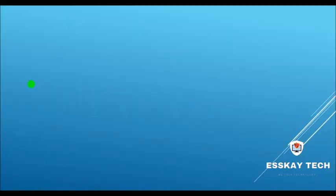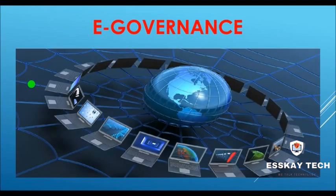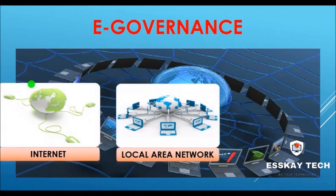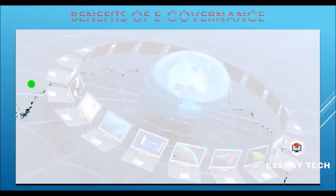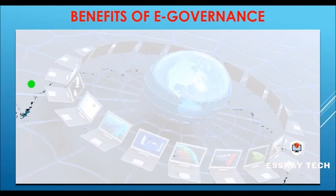Now let's go to the next topic: e-governance. E-governance is a way of describing the link between the government and its political, social, and administrative environment. It is the use of information and communication technology — like the internet, local area network, and smartphones — by the government to improve effectiveness, efficiency, and service delivery, and to promote democracy.